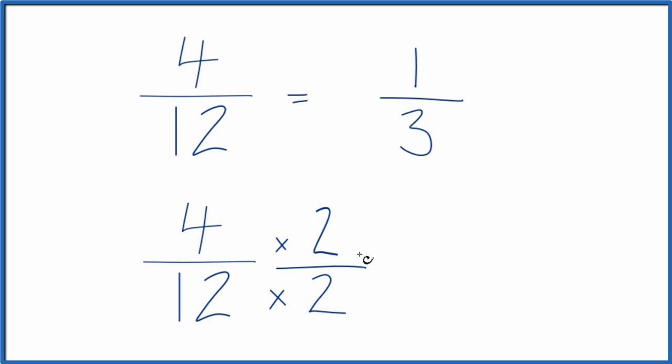What if we multiplied it by 2 over 2? Because 2 divided by 2, that's just 1. It doesn't change the value, just the way it's represented. Because 4 times 2 is 8, and then 12 times 2 is 24. So 8 over 24, that's another equivalent fraction for 4 twelfths.